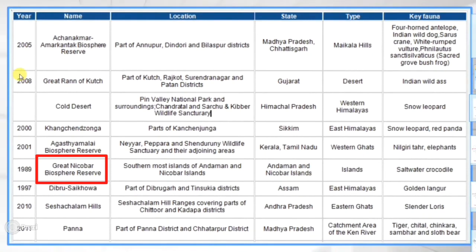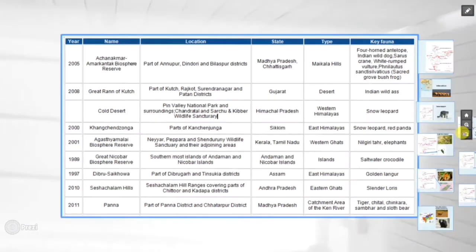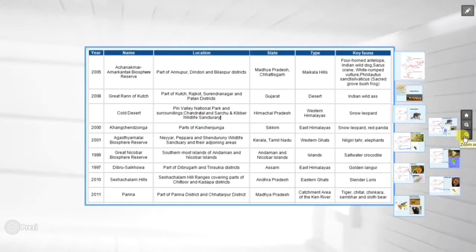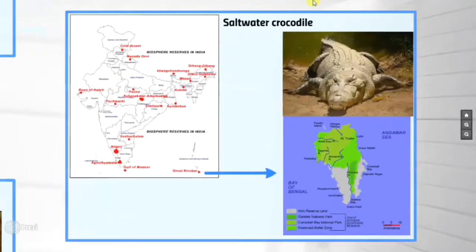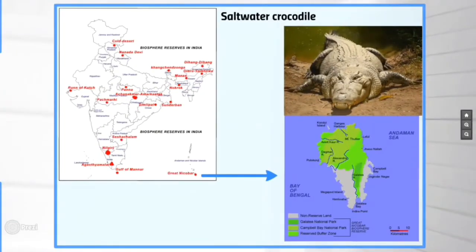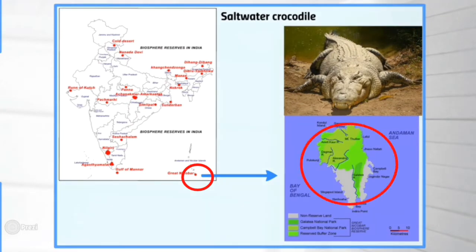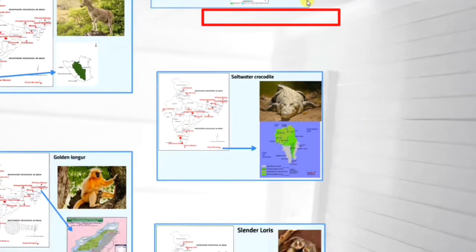Next is Great Nicobar Biosphere Reserve. As the name makes obvious, it is located in the Andaman and Nicobar Islands. On the map it is shown with an arrow, and the entire greenish portion is this biosphere reserve. The key fauna found here is the Saltwater Crocodile.